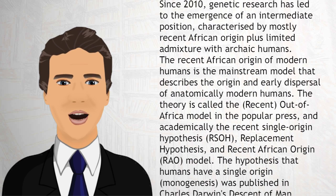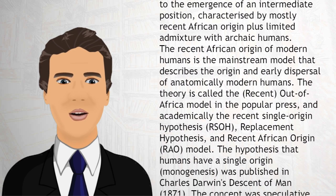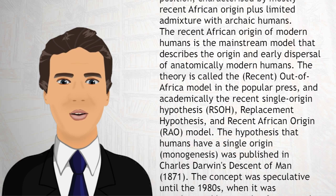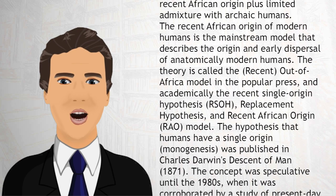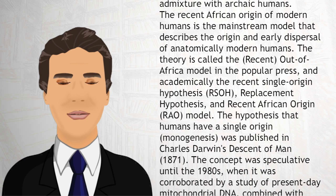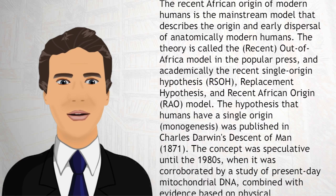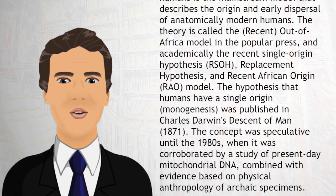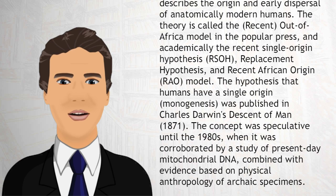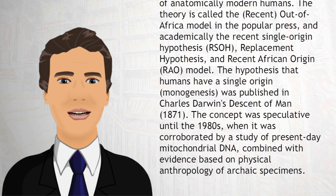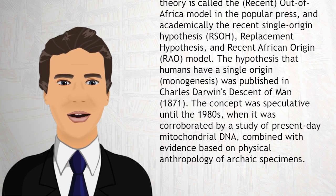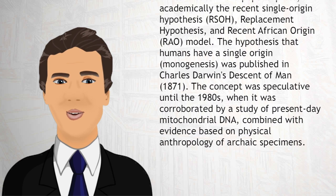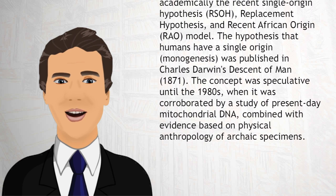The recent African origin of modern humans is the mainstream model that describes the origin and early dispersal of anatomically modern humans. The theory is called the recent out-of-Africa model in the popular press, and academically the recent single origin hypothesis (RSOH), replacement hypothesis, and recent African origin (RAO) model.